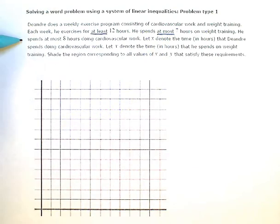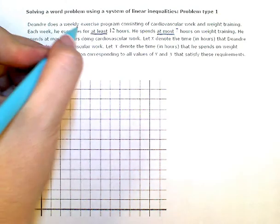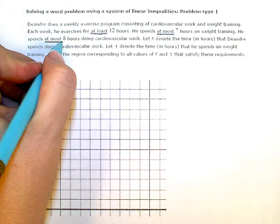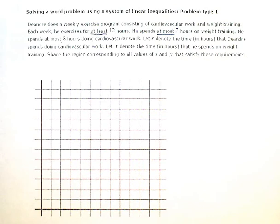He spends at most, here's another one, 8 hours doing cardiovascular work. Let X denote the time in hours that DeAndre spends doing cardiovascular work. Let Y denote the time in hours that he spends on weight training. Shade the region corresponding to all values of X and Y that satisfy these requirements.